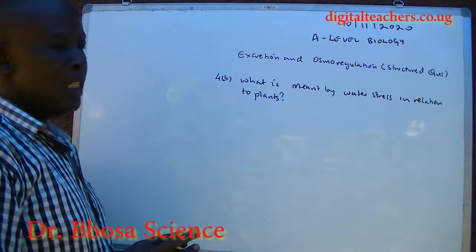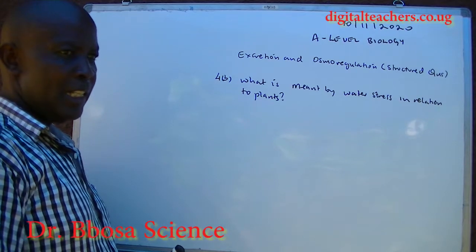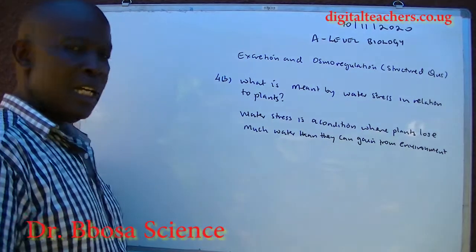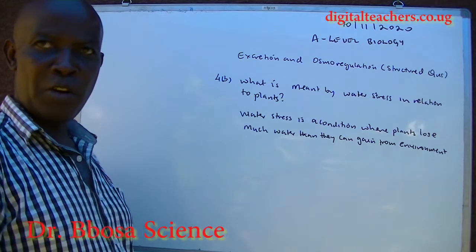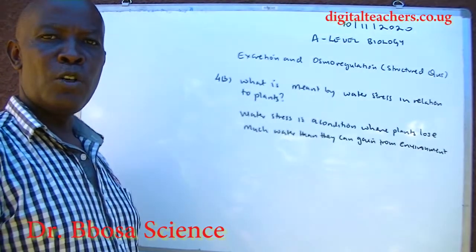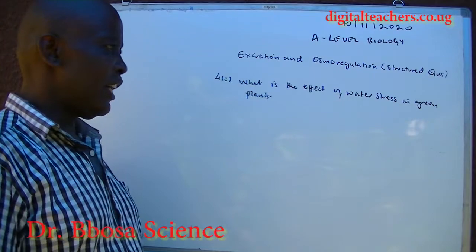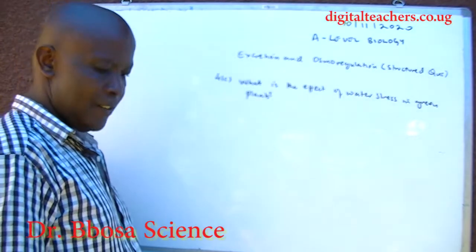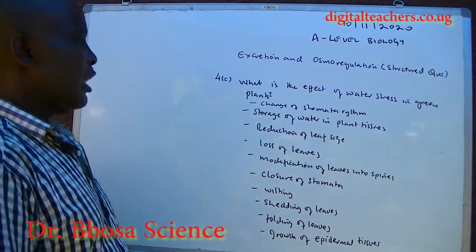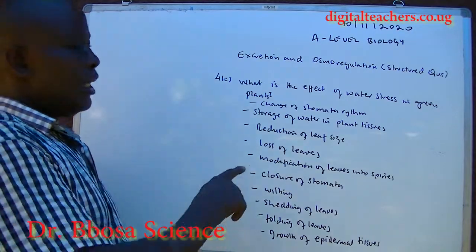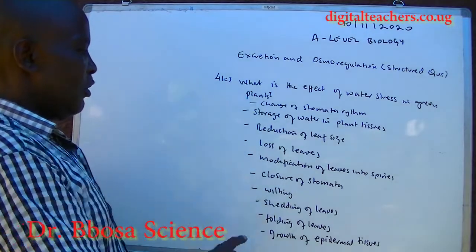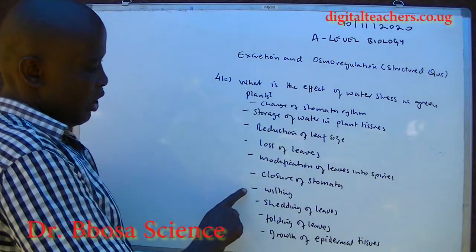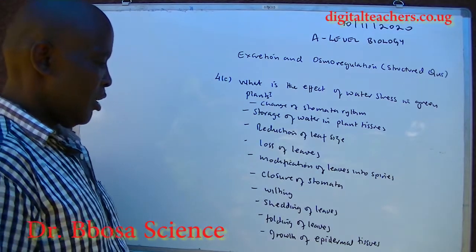What is meant by water stress in relation to plants? Water stress is a condition where plants lose much more water than they can gain from the environment or absorb from soil. What are the effects of water stress in green plants? Effects include change of stomatal behaviour, storage of water in plant tissues, reduction or loss of leaves, modification of leaves into spines, closure of stomata, wilting, shedding of leaves, and rolling of leaves.